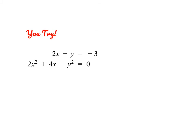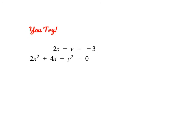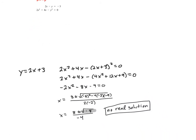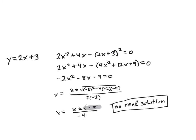Go ahead and pause the video and give this one a try — be careful when substituting. You need to substitute for y, and here you have a binomial to multiply out, so be careful to keep it grouped to distribute the negative. You should end up with this quadratic equation, and when you solve using the quadratic formula you should get no real solutions.